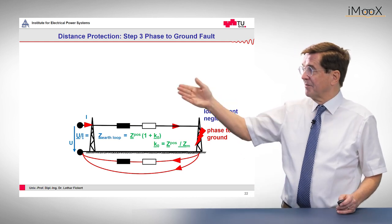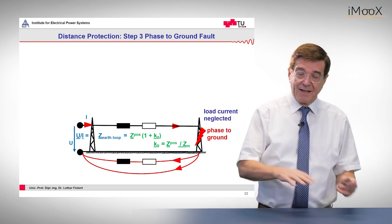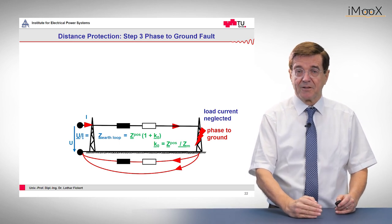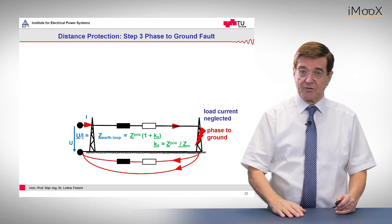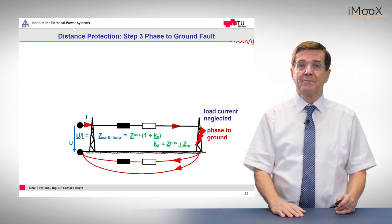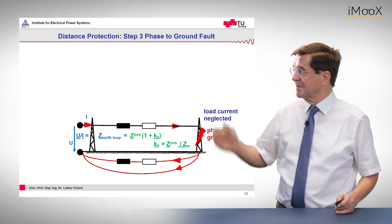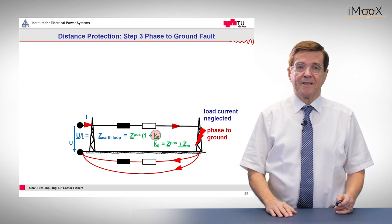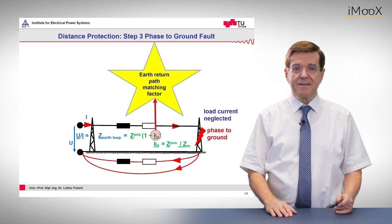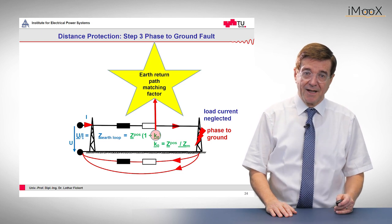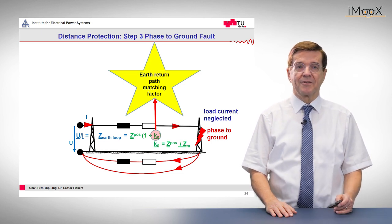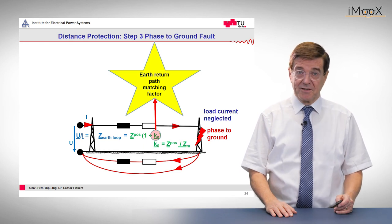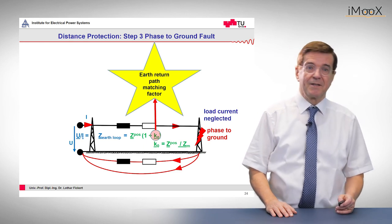We have this together, and the relation between the earth impedance and the positive sequence line impedance is constant. So we can express the whole loop impedance in these parts. To find out the positive sequence impedance, which we would like to have, we must know the earth return path matching factor by measuring the positive sequence and the zero sequence impedance.